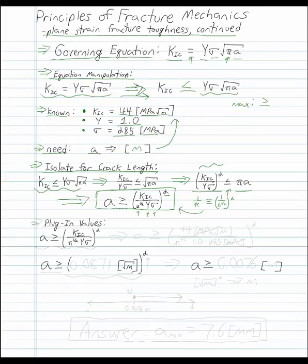Finally, we can now plug in values. Using this equation here, we'll plug in what we know. So A is greater than or equal to 44 MPa square meters, and this is going to be divided by pi to the 1 half multiplied by 1.0, and there's no units of that once again, multiplied by that stressed 285 MPa. All of this is going to be raised to the power of 2.